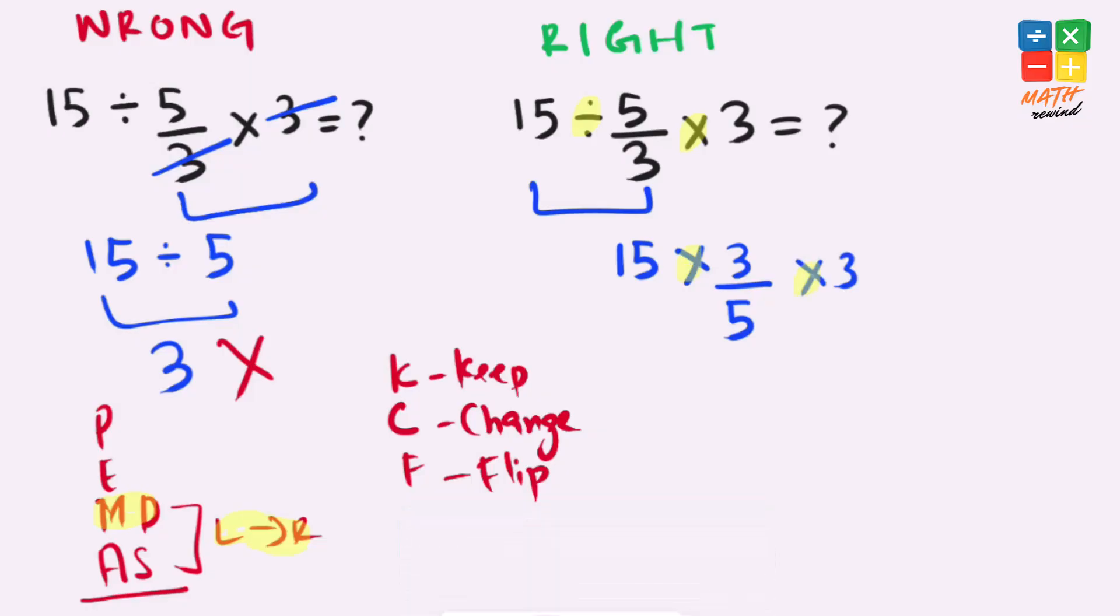Now we have two multiplication operators available. So we solve this left side first. 5 and 15 cancels out each other and leaves us with 3 times 3 times 3. Again, we work from left to right. So 3 times 3 gives us 9, and 9 times 3 gives us 27, which is the right answer to this problem.